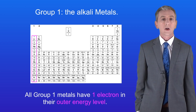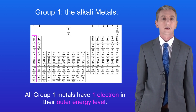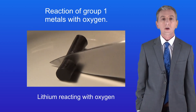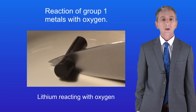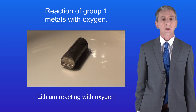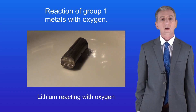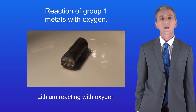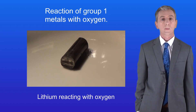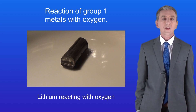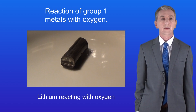We're going to start now by looking at how Group 1 metals react with oxygen. I'm showing you here the element lithium and I'm cutting this with a scalpel. One thing you'll notice is that Group 1 metals are soft. As soon as I expose some fresh lithium we can see that it reacts rapidly — the lithium is reacting with oxygen in the air forming lithium oxide.